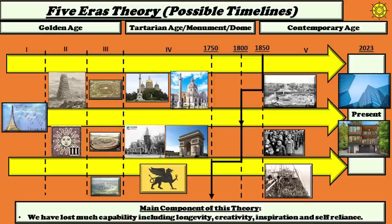We have three different theories on when the last Reset occurred, and again, this is all dependent on a dating system which may or may not be accurate, or may be completely fraudulent. We just don't know. But we suspect that the Reset occurred either in 1850, 1800, or 1750. In today's exploration, we're going to see an abundance of evidence that indicates it may have occurred in or around 1850, going off the dating system and points of reference we were given.